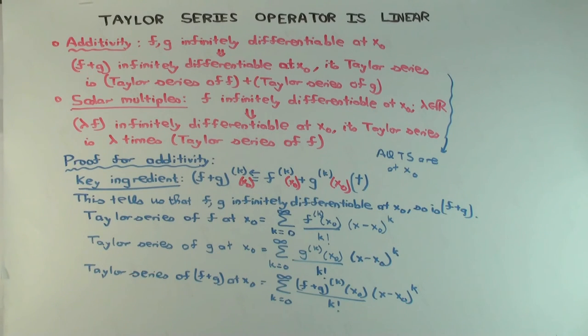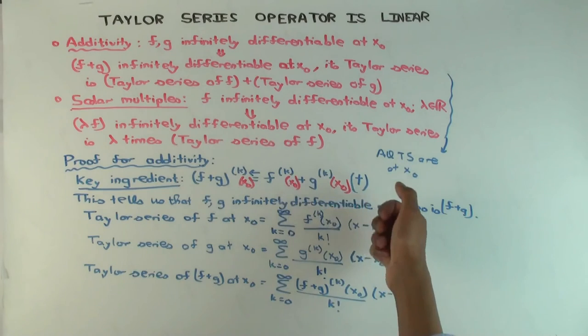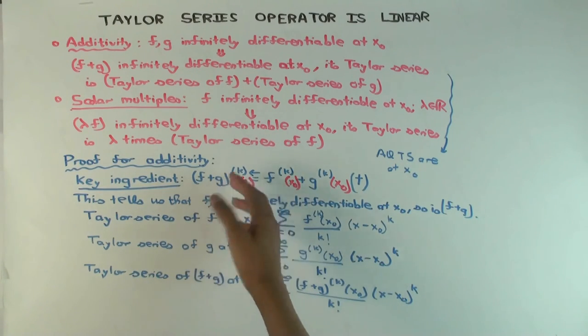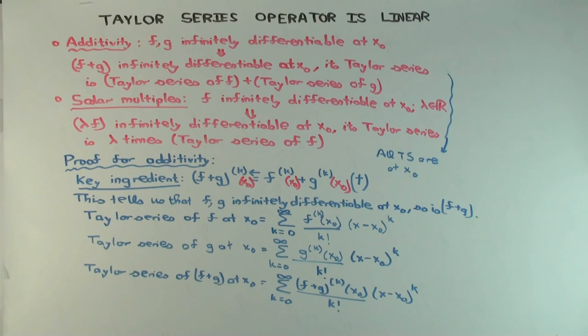Okay. Now the proof for scalar multiples is similar, but I won't do it. I mean, there you just have to deal with one function f instead of two, and you have to use that repeated differentiation, you can pull out scalars. Okay, so that would be a very similar proof. In a future video we'll see that the Taylor series of the product is the product of the Taylor series, and that's not very obvious at all. That does require some serious work.